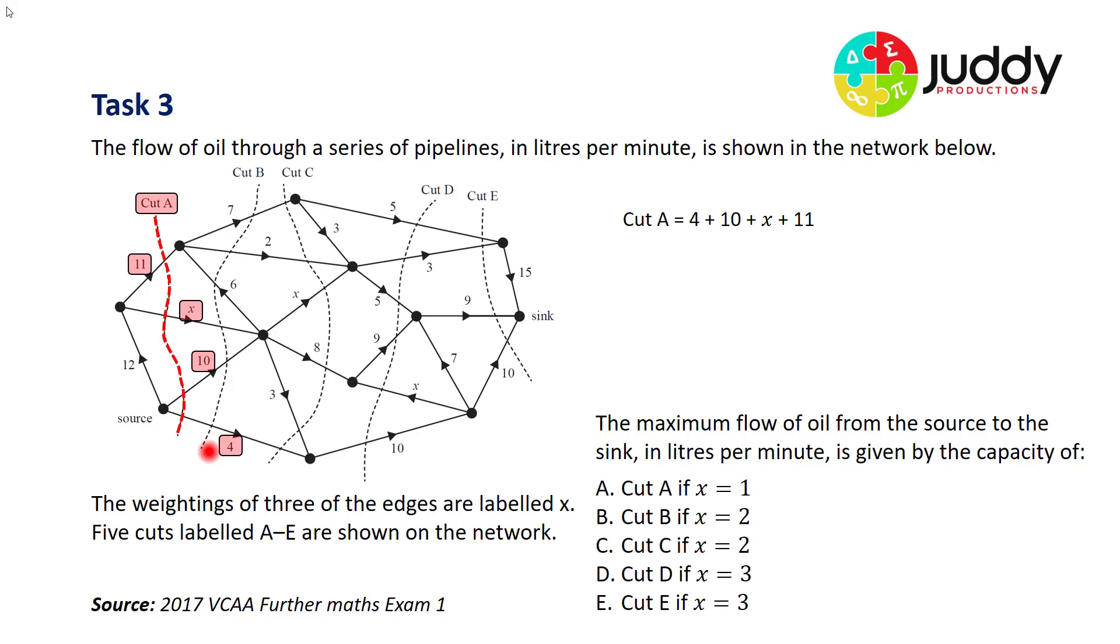First of all, cut A. It involves a weighted edge of 4, 10, X and 11, all heading in the right direction from source to sink. So cut A is equal to 4 plus 10 plus X plus 11. We don't know the actual value yet.